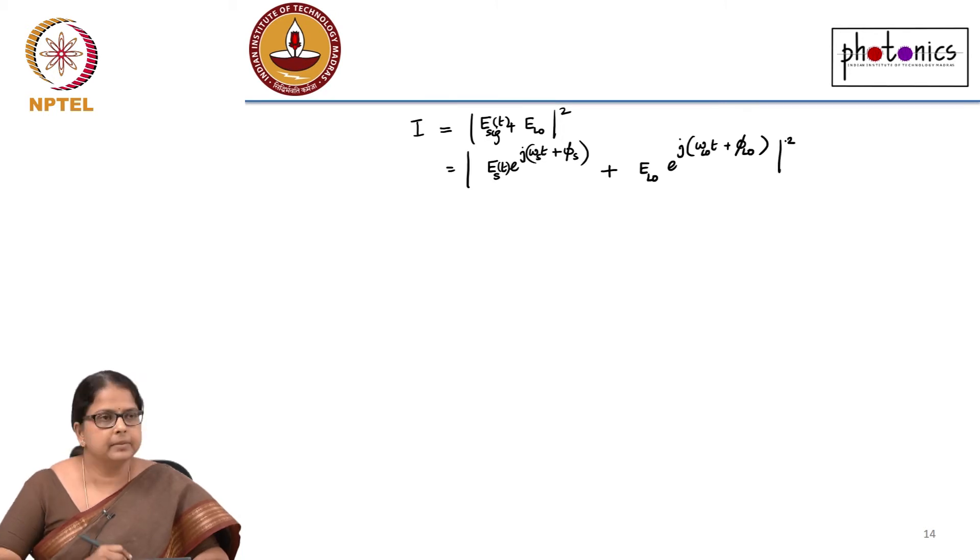Mod square of this. I can change this φ_s and φ_LO and actually start expanding this. What would be the result of this expansion? It is mod square, so you multiply this with the complex conjugate. If I do that multiplication, let us write the steps.